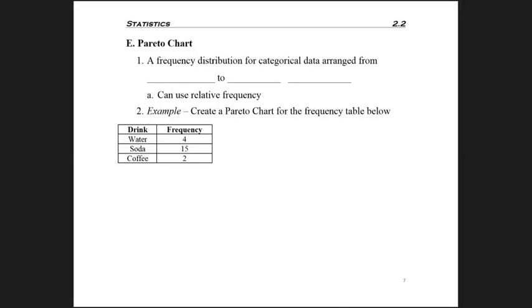A Pareto chart is a second type of chart that is for categorical data. But the important thing here is that the data is arranged from the largest to the smallest frequency. You could use relative frequency, but whatever you're using to categorize your data, you always need to be going from the biggest to the smallest of whatever the category is.